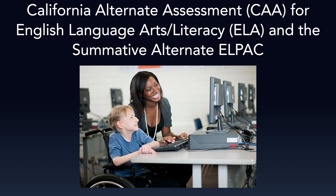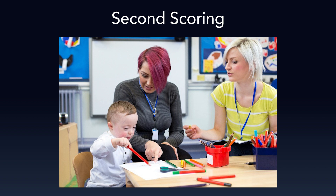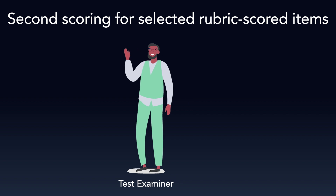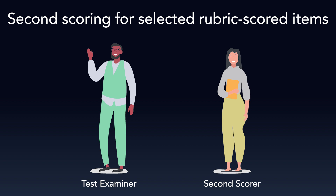some local educational agencies, or LEAs, will be required to participate in second scoring using the DEI. Second scoring is the process of having a second scorer score the same student's rubric-scored items simultaneously, yet independently, from the student's test examiner. The second scorer must be a test examiner or a test administrator. The test examiner will assist the student in submitting answers into the test delivery system, or TDS. After the second scorer observes and scores the student's responses in real-time, the second scorer will enter the student's scores into the DEI.